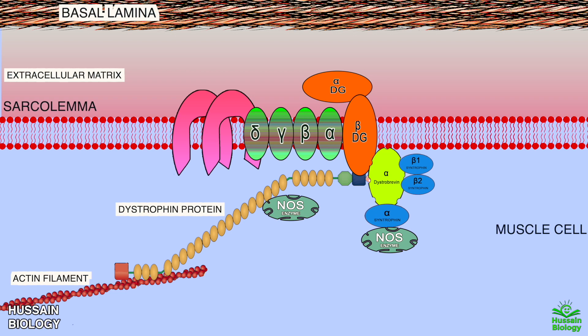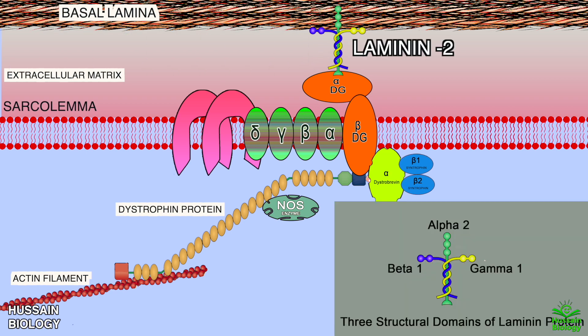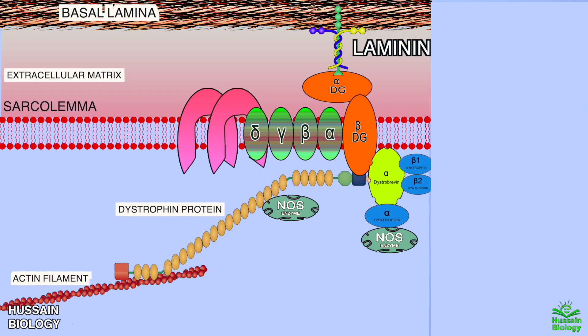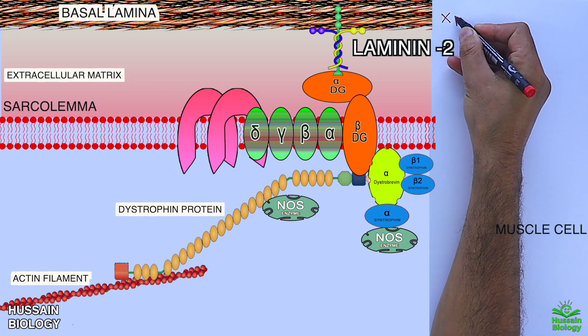These syntrophin proteins are important adapter proteins involved in signal transduction. Syntrophin proteins also bind nNOS, that's neuronal nitric oxide synthase. On the extracellular part, the alpha-dystroglycan protein binds to the laminin protein in the basal lamina, as shown in the diagram. These are the proteins that form the Dystrophin Associated Protein Complex.